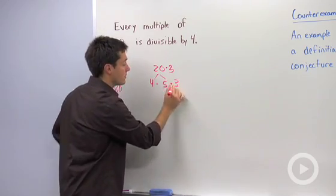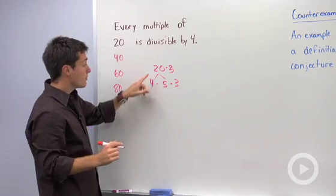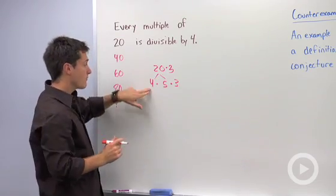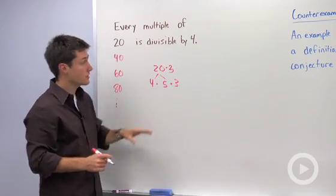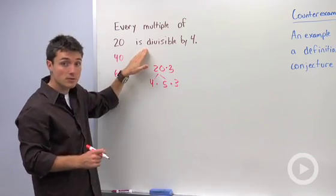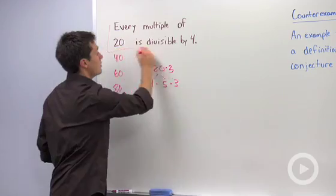If I multiply 20 by 3, then I'm still going to have this 4 as a factor. So no matter what I multiply 20 by, this 4 will be here, which means it will be divisible by 4. There is no counterexample that will make this statement false, which means this statement is always true.